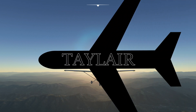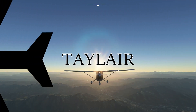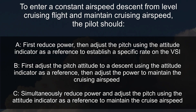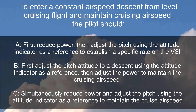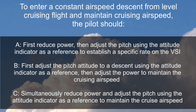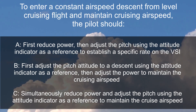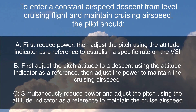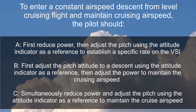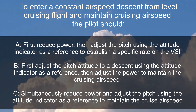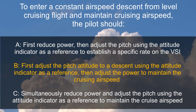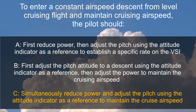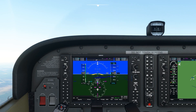Welcome to another Tailair Theory Quickie. Here's a question from the FAA database: to enter a constant airspeed descent from level cruising flight and maintain cruising airspeed, the pilot should — and we're given three scenarios here which we'll work through individually in the sim.